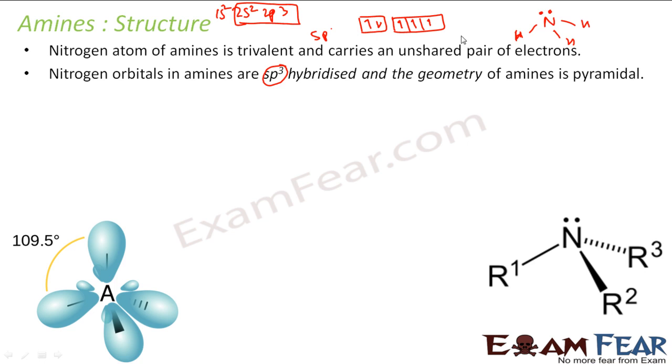Because this part will be lone pair if you assume. And this will be 3 bonds. 1 bond, 2 bond, 3 bond. And this will be a lone pair here. And they form sp3 hybridized. That is how the structure is.